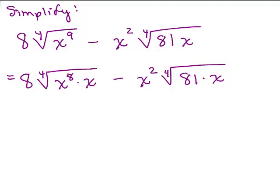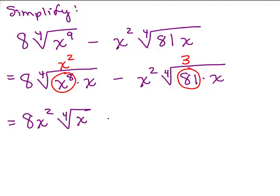So for the x to the 8th, the 4th root of x to the 8th is x squared, easy way, 4 into 8, right? And then the 4th root of 81, that comes out as a 3. So what do I have here? 8x squared is out in front, it's the 4th root of x minus 3x squared, 4th root of x.